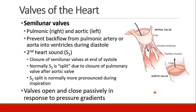The semilunar valves — the pulmonic and aortic valves — prevent backflow from the pulmonary artery or the aorta back into the ventricles during diastole. These valves are responsible for the second heart sound, which is the closure of the semilunar valves at the end of systole. Normally, the S2 sound is actually split because the pulmonary valve closes a little bit after the aortic valve, and this split is more pronounced during inspiration. Both the AV valves and the semilunar valves open and close passively in response to the pressure gradients that occur during the cardiac cycle.